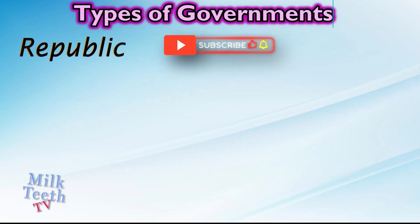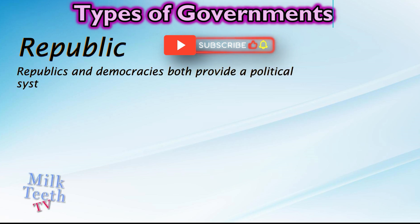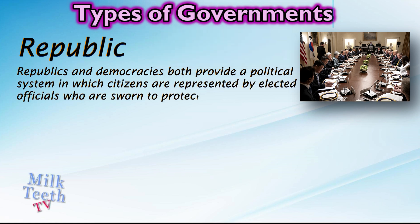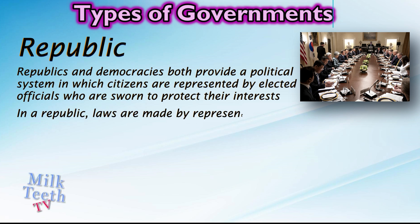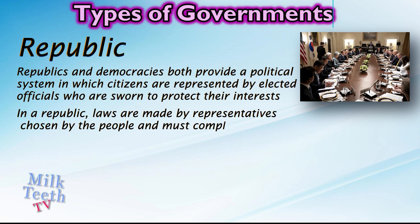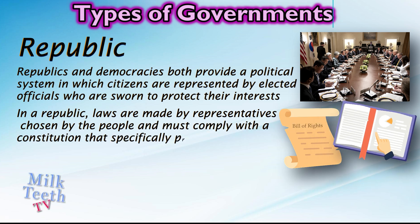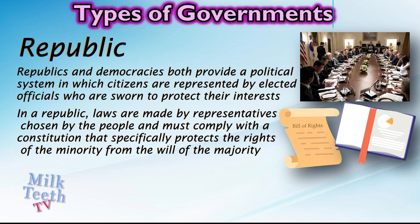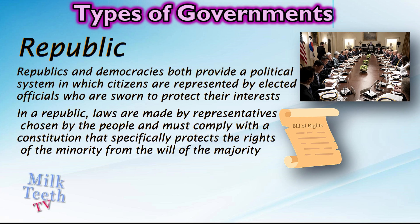Republic: Republics and democracies both provide a political system in which citizens are represented by elected officials who are sworn to protect their interests. In a republic, laws are made by representatives chosen by the people and must comply with a constitution that specifically protects the rights of the minority from the will of the majority.